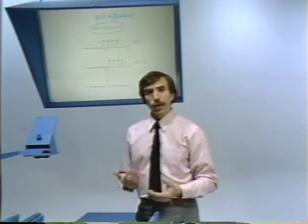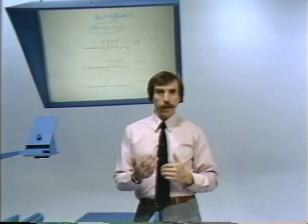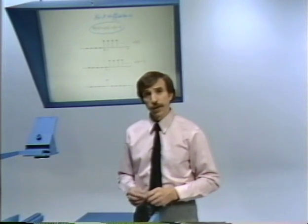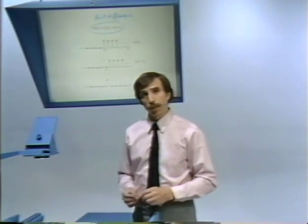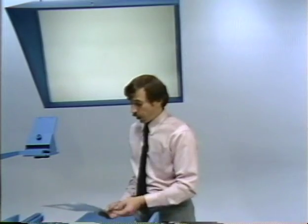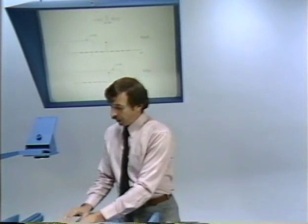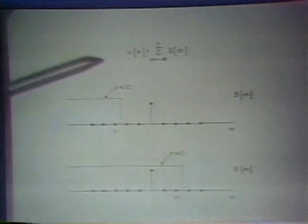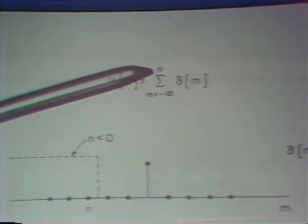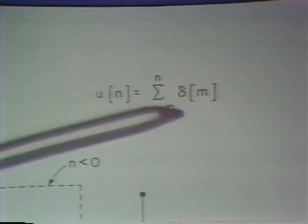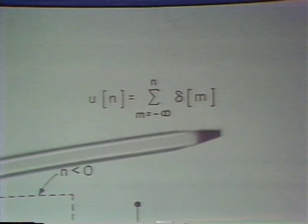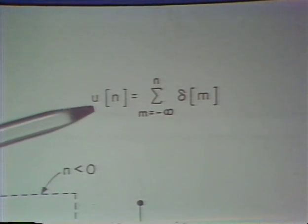Now in a similar way, we can express the unit step in terms of the unit impulse. There are several ways of doing this. One way is through a relationship referred to as a running sum. If we think of forming the sum from minus infinity up to some value n of a unit impulse or unit sample, then this running sum is equal to the unit step.